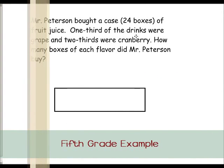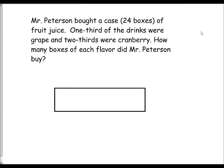This is an example of a fifth grade word problem using a tape diagram to solve. Mr. Peterson bought a case of 24 boxes of fruit juice. One third of the drinks were grape and two thirds were cranberry. How many boxes of each flavor did Mr. Peterson buy? Students need to look for the fraction mentioned in the word problem, which is thirds. So we're going to take the tape diagram and cut it into three equal parts.